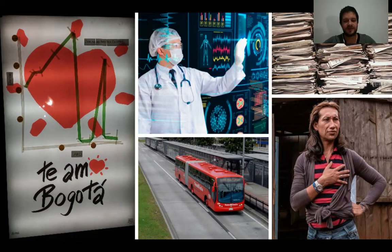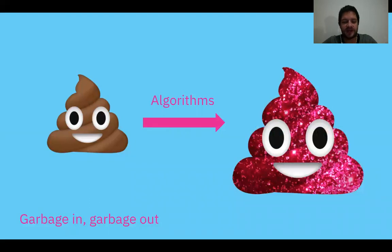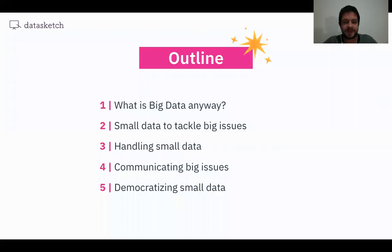We've seen these kinds of problems many times, and they have a lot to do with different issues on data: data availability and data biases. If we continue training algorithms with bad data, we're only going to get bad results. Today we'll talk about big data, then about small data and how it can be used to tackle big issues, how we can handle small data to communicate big problems, and finally some tips on democratizing small data.